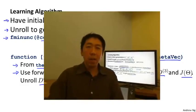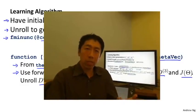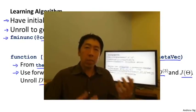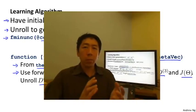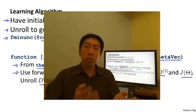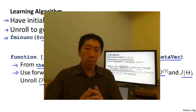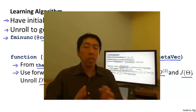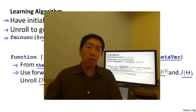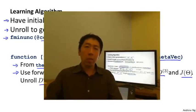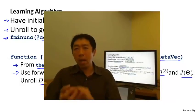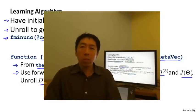Hopefully you now have a good sense of how to convert back and forth between the matrix representation and the vector representation of the parameters. The advantage of the matrix representation is that it's more convenient for forward propagation and backpropagation and easier to use vectorized implementations. The advantage of the vector representation — theta vec or D vec — is that advanced optimization algorithms assume all parameters are unrolled into a big long vector, so you can quickly convert between the two as needed.